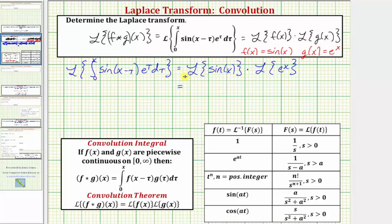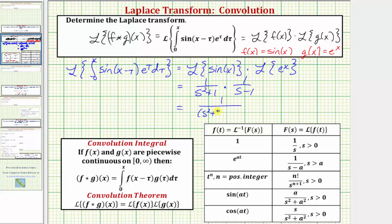Looking at the table of Laplace transforms, the Laplace transform of sine x, using the row where a equals one, is one divided by the quantity s squared plus one. Simplifying, the full Laplace transform is one divided by the quantity s squared plus one times the quantity s minus one.